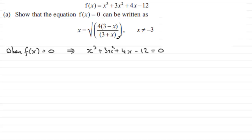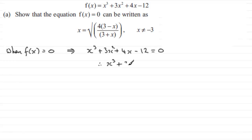Now, to rearrange this to get the target form, I noticed that in the numerator, if you were to expand it, we've got 4 times 3 giving 12 minus 4x. That's giving me a clue — 12 minus 4x suggests we should move those two terms to the other side and factorize. So if we subtract 4x and add 12 to both sides, we get x cubed plus 3x squared equals 12 minus 4x.